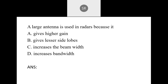Next: A large antenna is used in a radar because it gives: A — higher gain; B — lesser side lobes; C — increased beam width; D — increased bandwidth. When antenna size increases, gain naturally increases. The correct answer is A — higher gain.